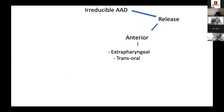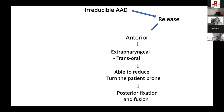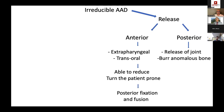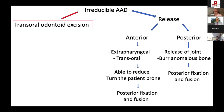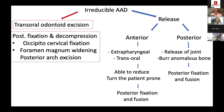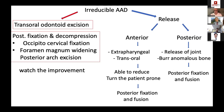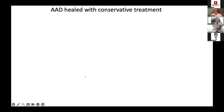Alternatively, posterior release involves releasing the joint and burring anomalous bone before posterior fixation and fusion. Older approaches included transoral odontoid excision, posterior decompression, and foramen magnum widening — with staged odontoid excision if no neurological improvement. Nowadays, release techniques allow adequate alignment and have largely replaced these staged approaches.